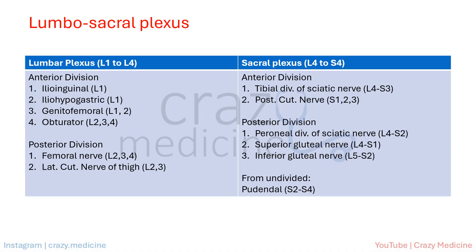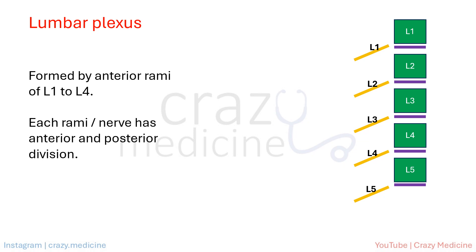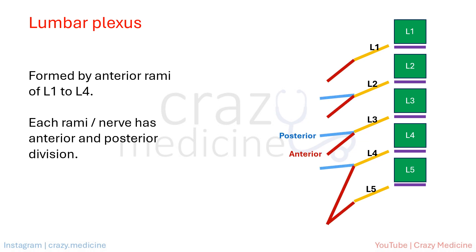For understanding foot drop and its approach, it is necessary to understand the lumbosacral plexus, which we will learn in subsequent slides. First, the lumbar plexus — it is formed by nerves of anterior rami of L1 to L4. Each rami or nerve has anterior and posterior division. The L4 and L5 component contributes to the lumbosacral plexus.